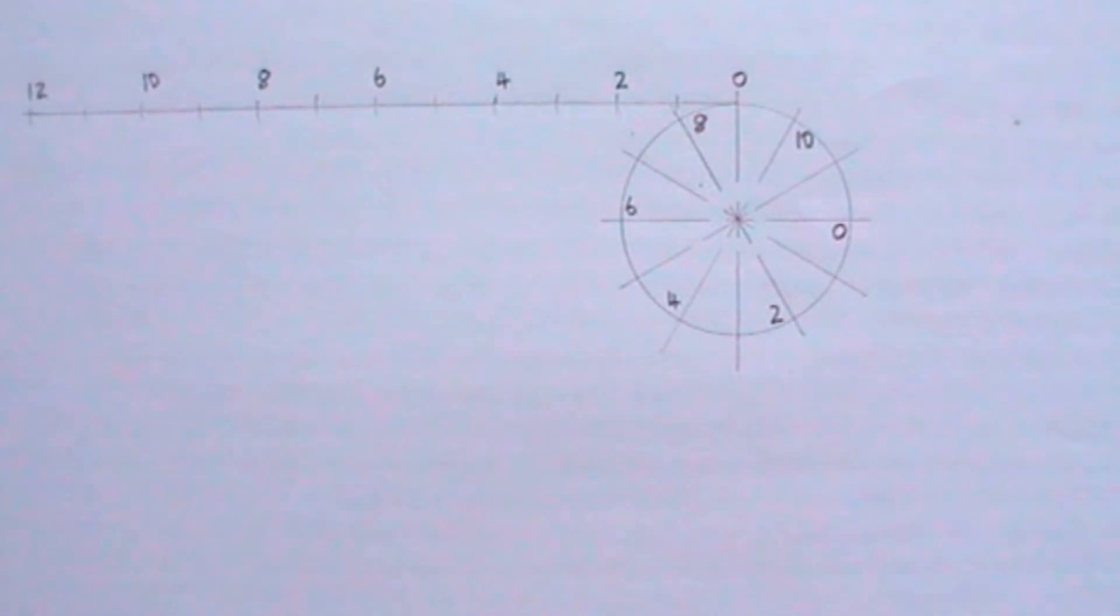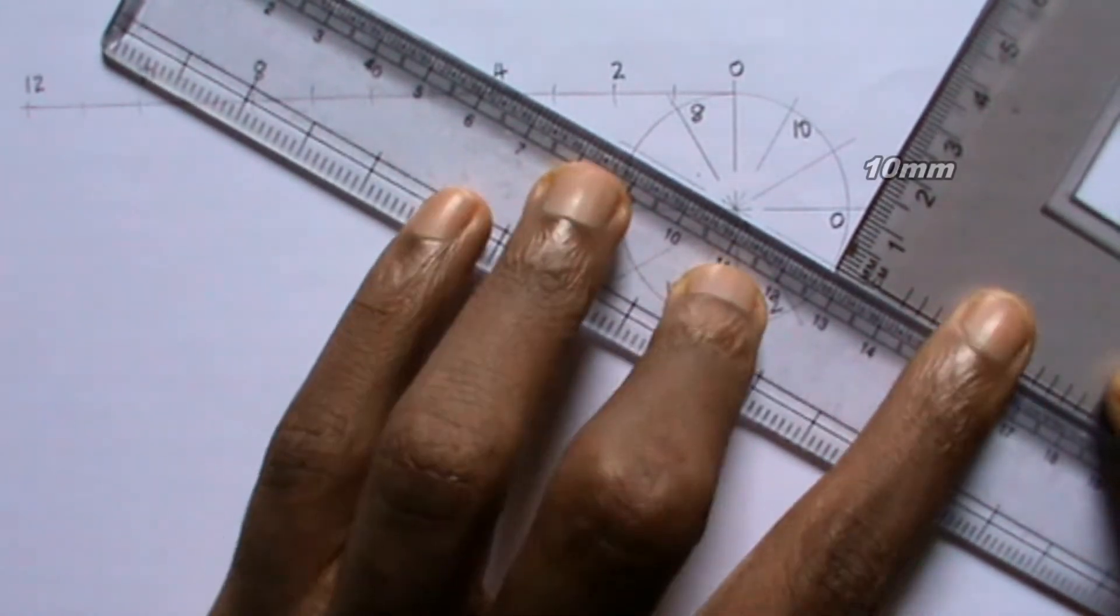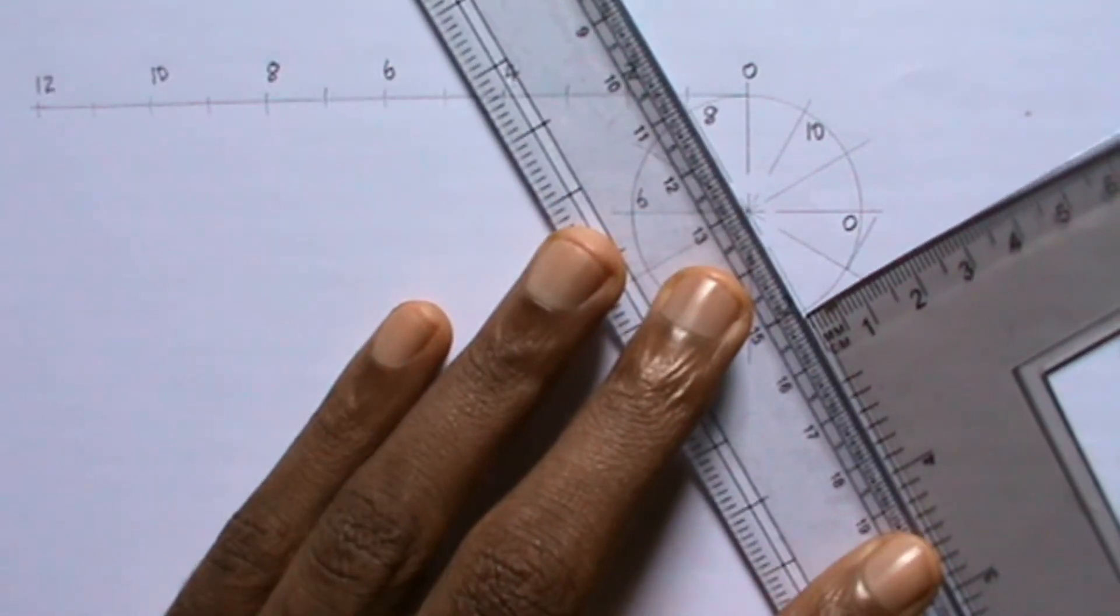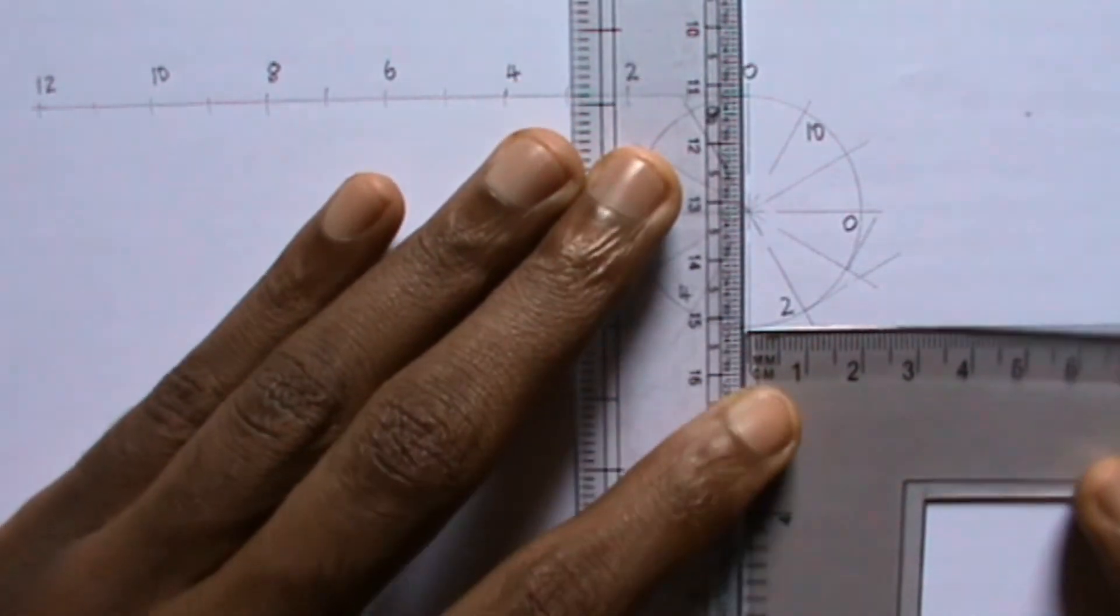Now I will draw lines from points where lines of division intersect the circumference of the circle. I will draw a 10 mm line from point 1, perpendicular to the line of division that intersects point 1. For point 2, I will draw a 20 mm line. I will continue in this pattern.